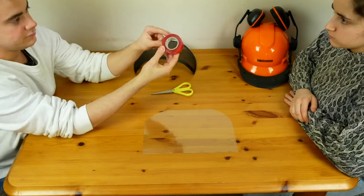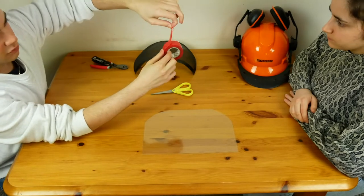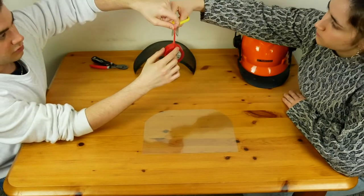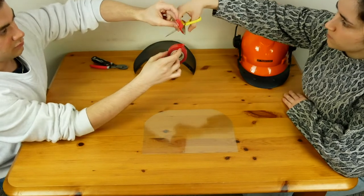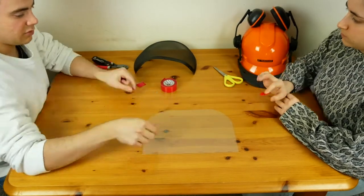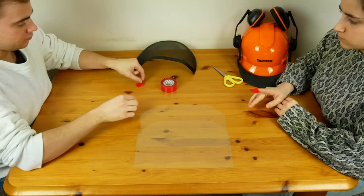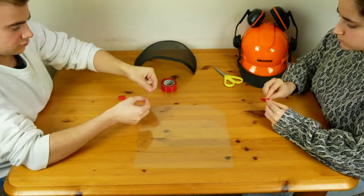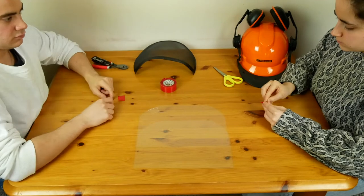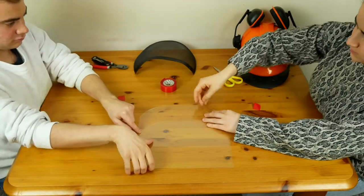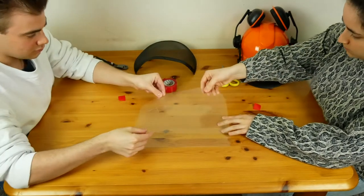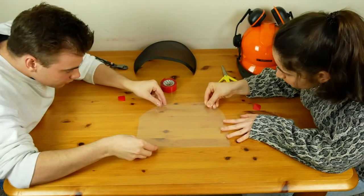Next, we will use the double-sided tape to stick the two pieces of PVC sheet together. Just make sure that the sheets are matching in shape.